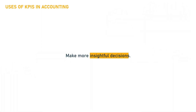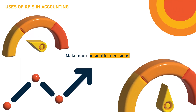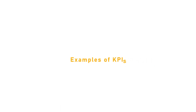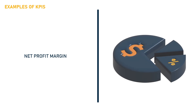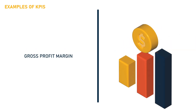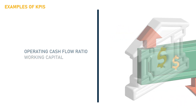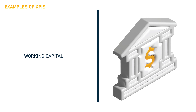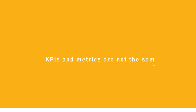And because it measures your progress towards a specific goal, you can use KPIs to make more insightful financial decisions. Among the common examples of KPIs in accounting are the net profit margin, gross profit margin, operating cash flow ratio, working capital, inventory turnover, and more.